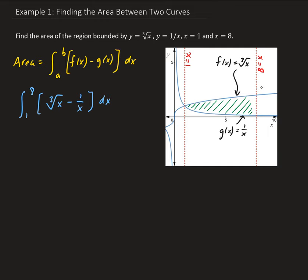Now we're going to go ahead and find the integral. This is nothing more than the integral from 1 to 8 of x to the 1/3 minus 1 over x. Taking the integral of this with respect to x, we get x to the 1/3, which gives us x to the 4/3, divided by 4/3. That's going to give us 3/4 x to the 4/3, minus the integral of 1 over x, which is just the natural log of x.